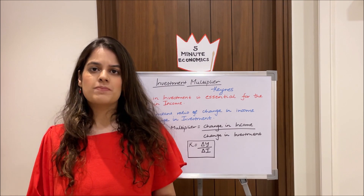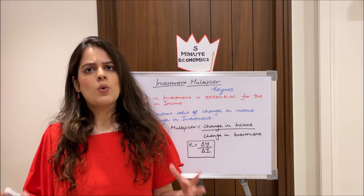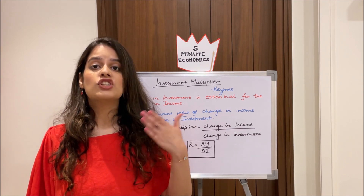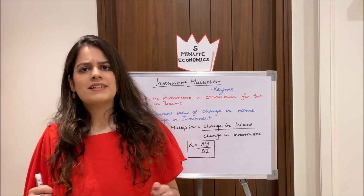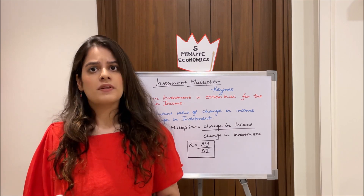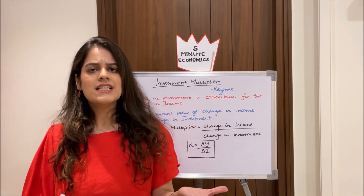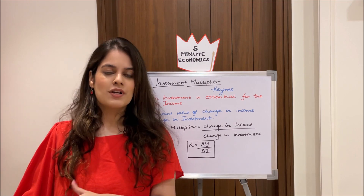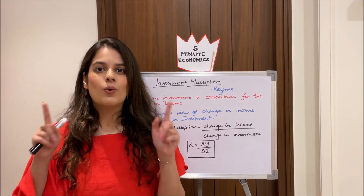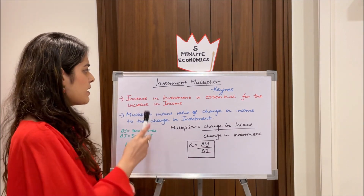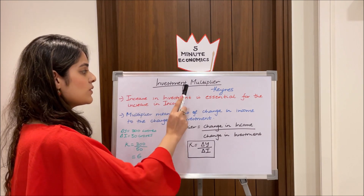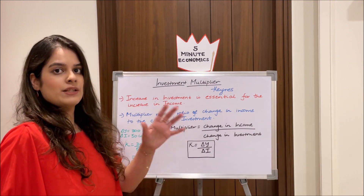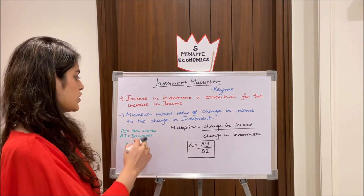The concept of investment multiplier was developed by J.M. Keynes. Through this concept, Keynes showed the relationship between the change in income and the change in investment. For example, if investment in the economy increases by 100 crores, we might think income also increases by 100 crores — but that is not true. Income might increase by 200 crores, because of the multiplier mechanism. Investment multiplier shows us that an increase in investment is essential for an increase in income.